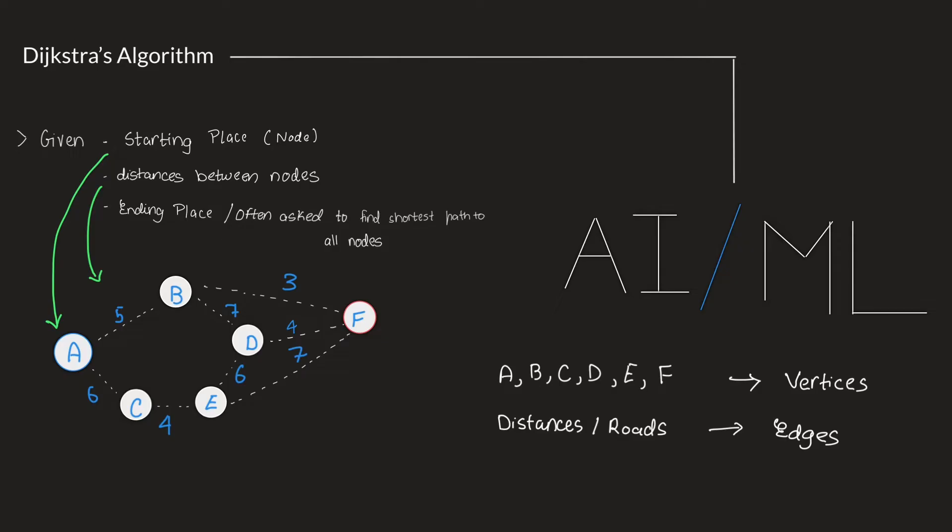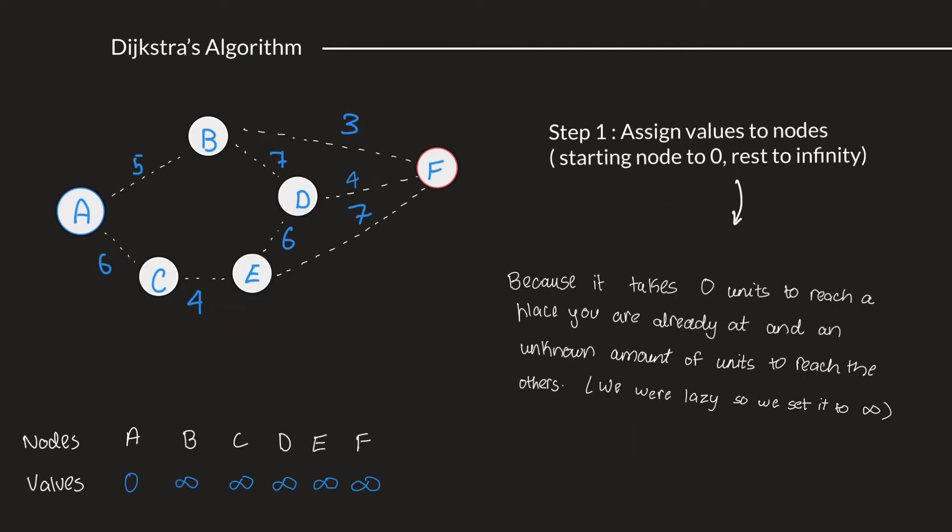The edge from A to B has a distance of 5, A to C is 6, and so on. In this case, we will be solving for the shortest distance and path from A to F.